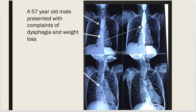The distal one third of the esophagus is normal in caliber, and contrast is freely entering into the stomach. This is the aortic knuckle causing a smooth impression on the upper esophagus. You can see the entire narrowing and mucosal irregularity.